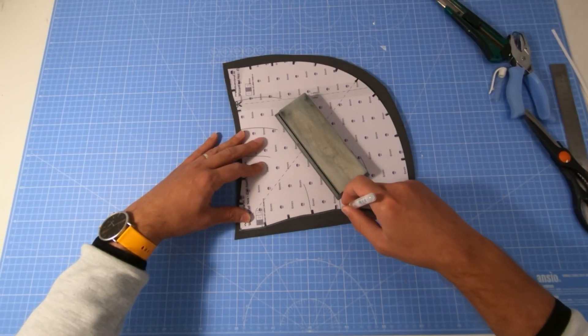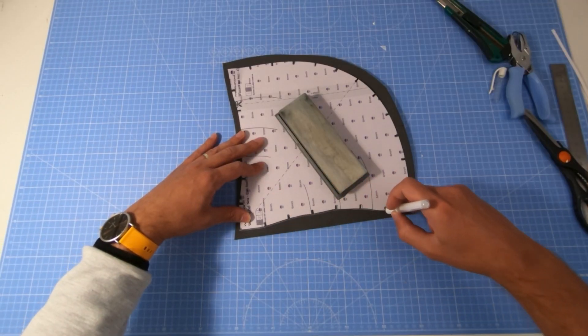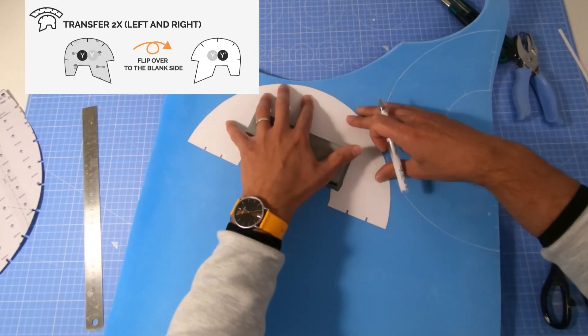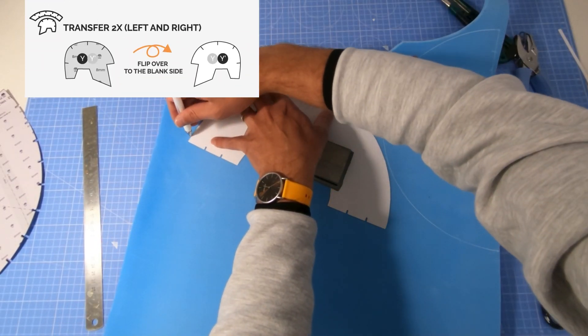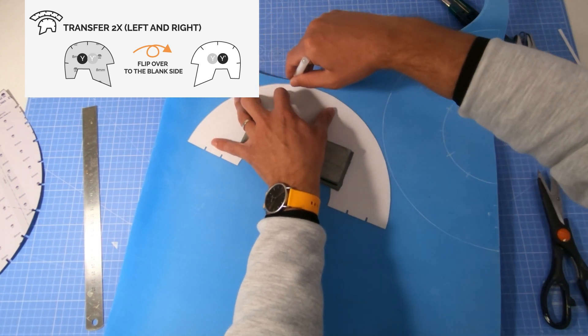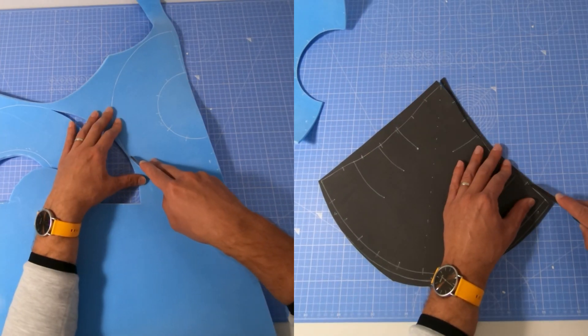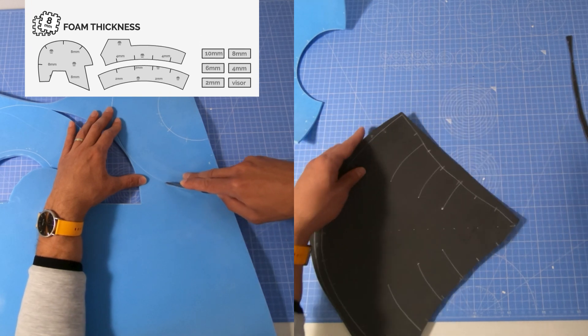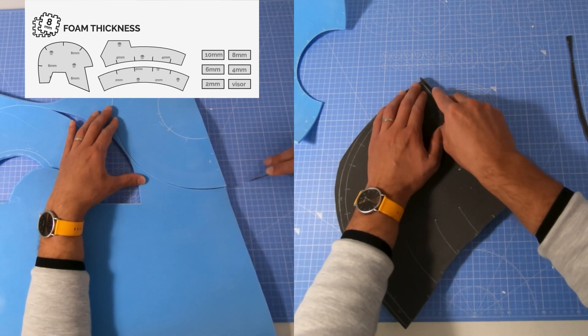Time to trace all the patterns onto the foam. Some parts need to be cut twice as left and right hand side, so simply flip the pattern over to the blank side and transfer again. Suggested foam thickness is printed on each pattern. For this project I'm using 4mm and 6mm foam.